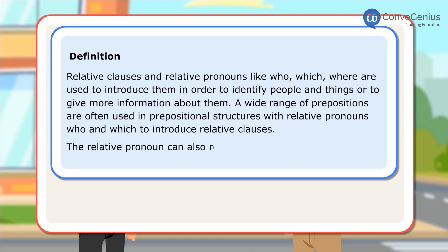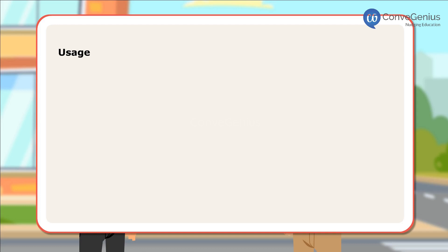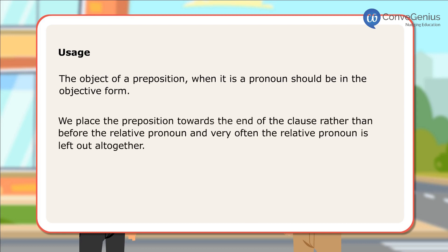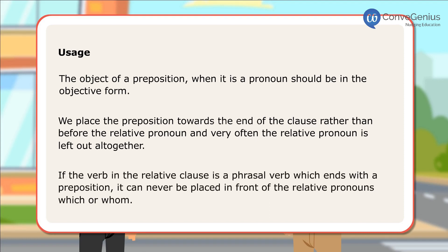The relative pronoun can also refer to the object of a preposition. Usage: The object of a preposition, when it is a pronoun, should be in the objective form. We place the preposition towards the end of the clause rather than before the relative pronoun, and very often the relative pronoun is left out altogether. If the verb in the relative clause is a phrasal verb which ends with a preposition, it can never be placed in front of the relative pronouns which or whom.